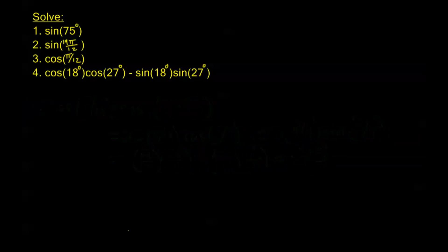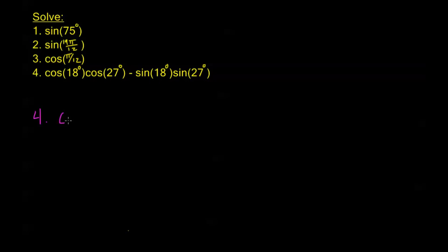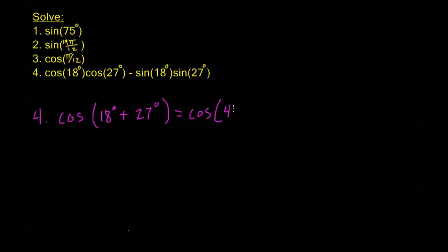For problem 4 we need to solve an expression that looks a little different. We should be able to identify this as the addition formula for cosine. Looking at: cosine 18 times cosine 27 minus sine 18 times sine 27 — we know it's a cosine formula because cosines are together and sines are together. For cosine the sign in the argument is opposite to the right-hand side, so this is cosine of 18 plus 27, which is cosine of 45 degrees, equal to root 2 over 2.